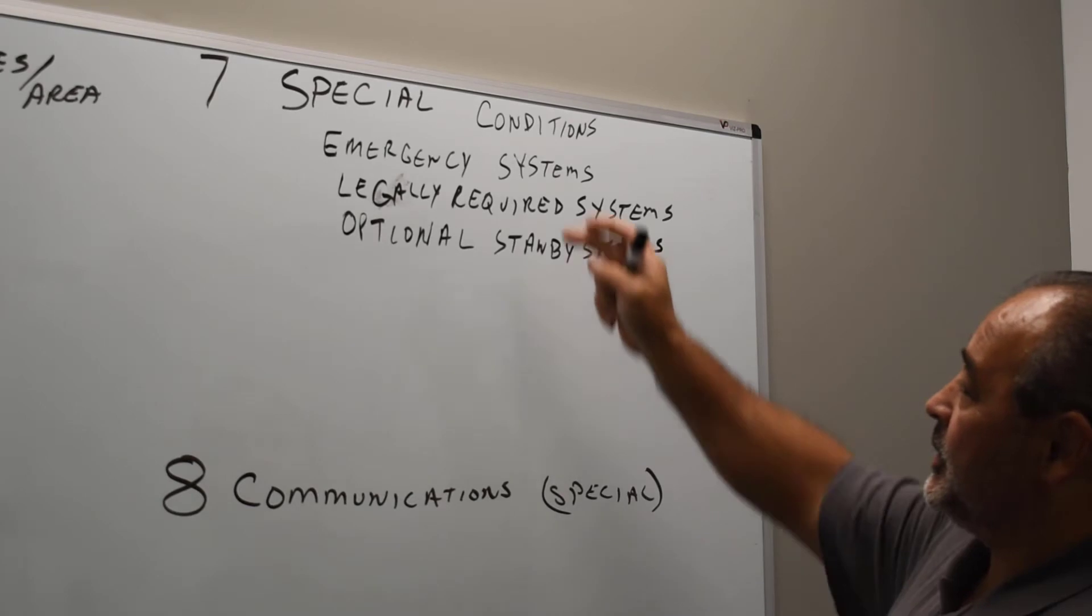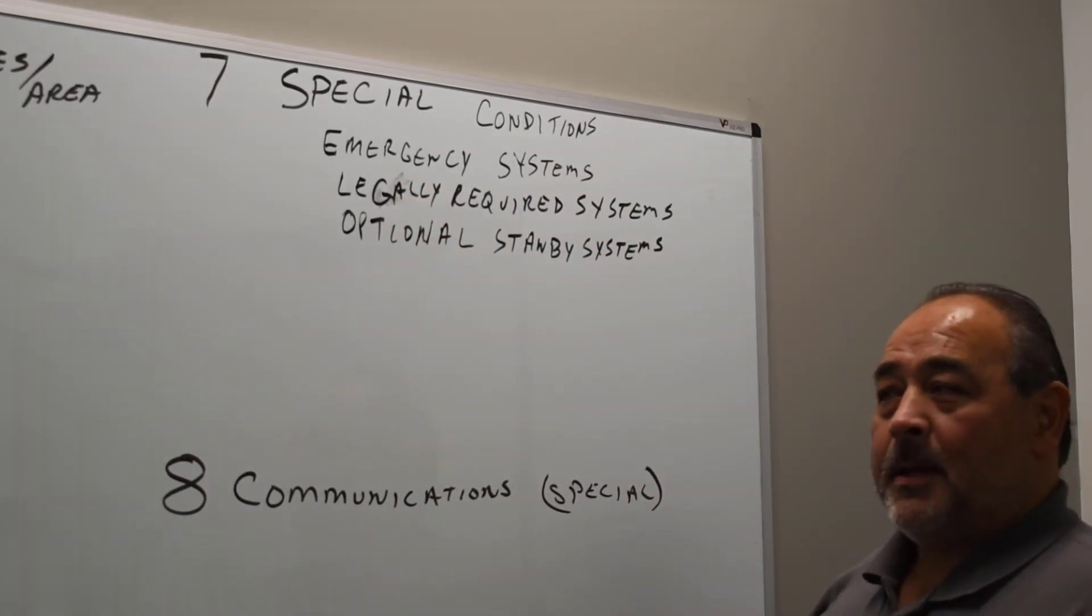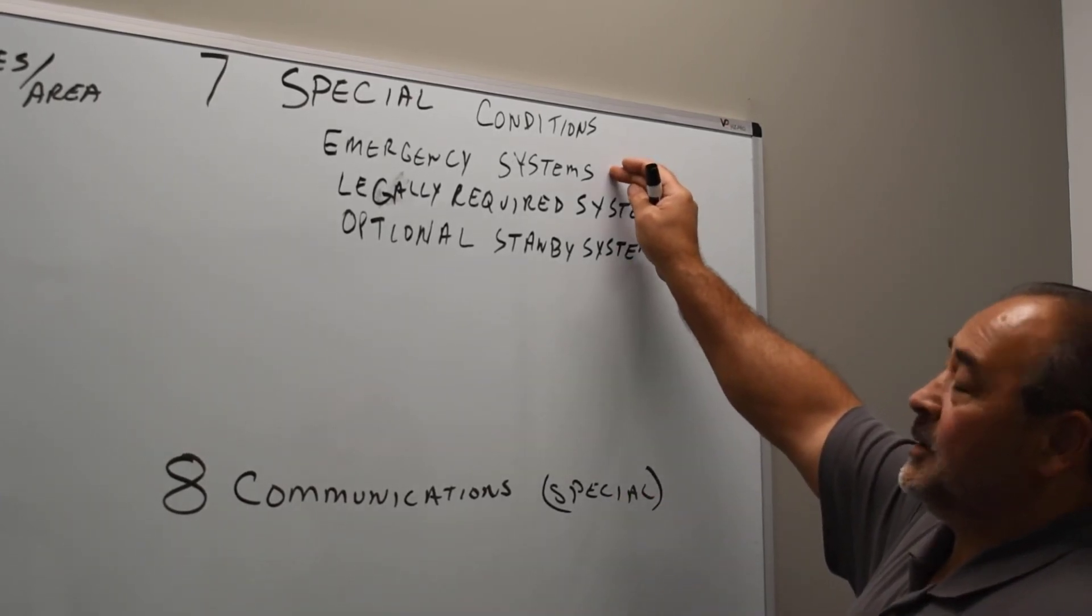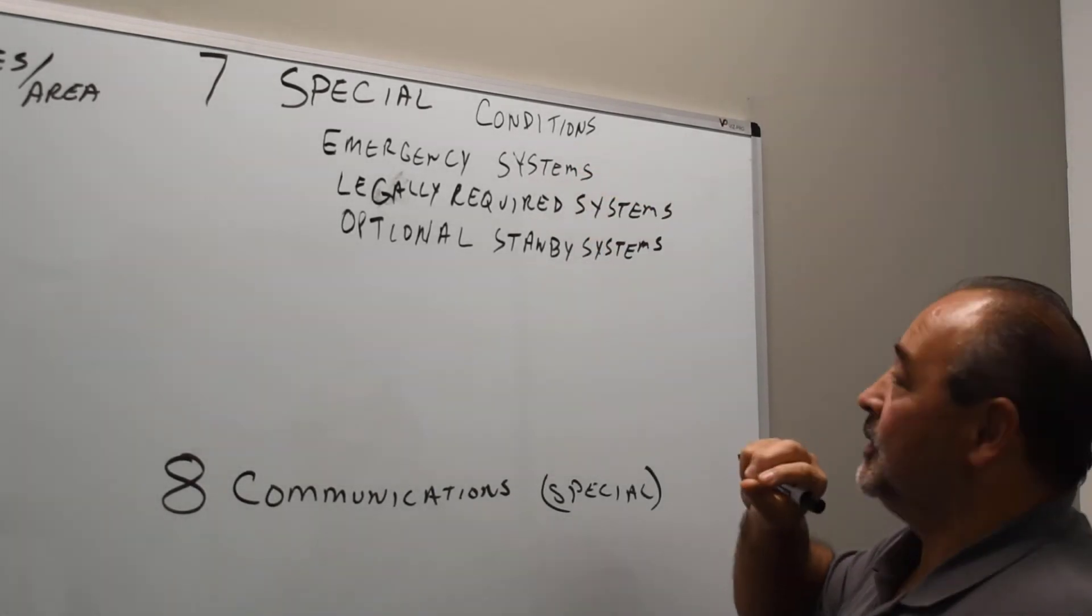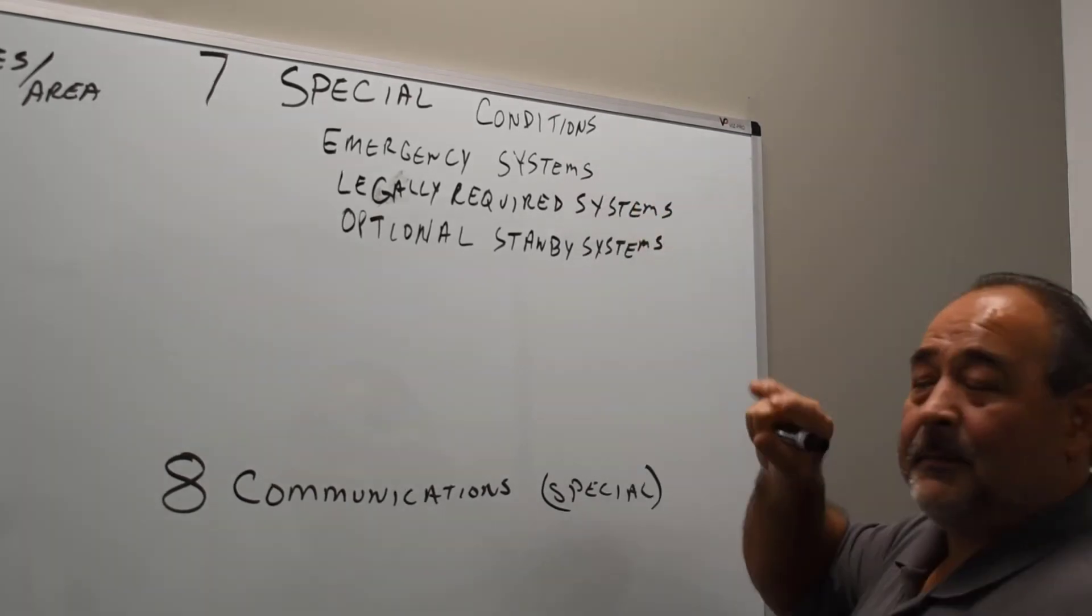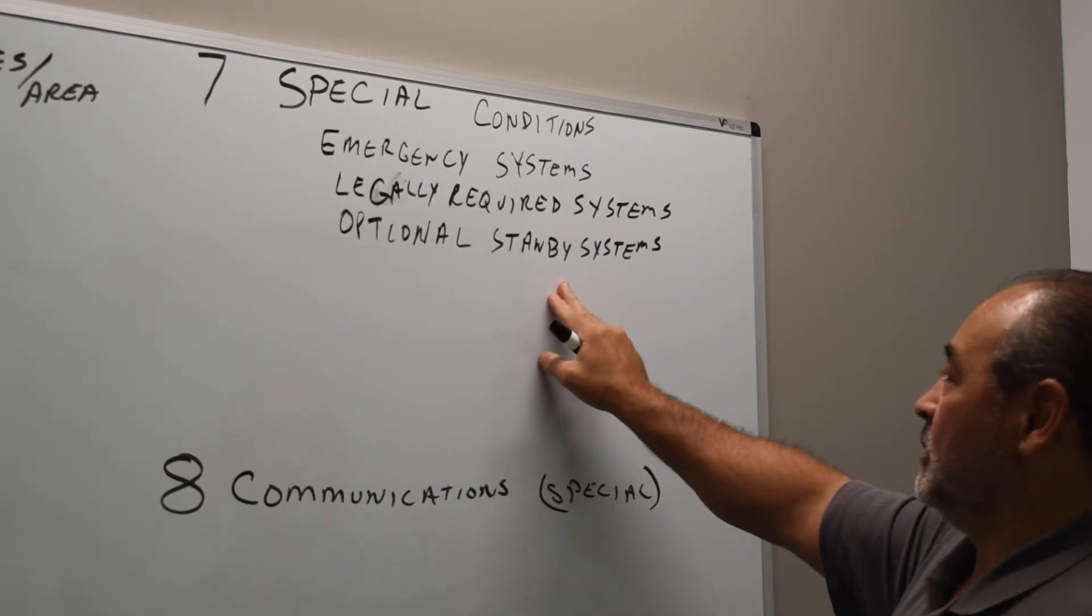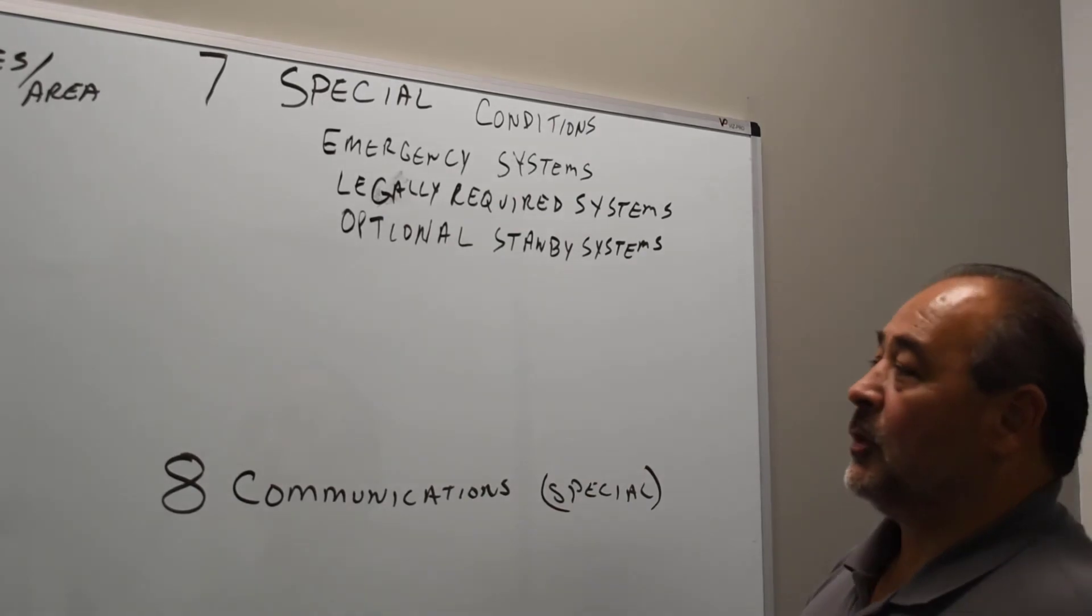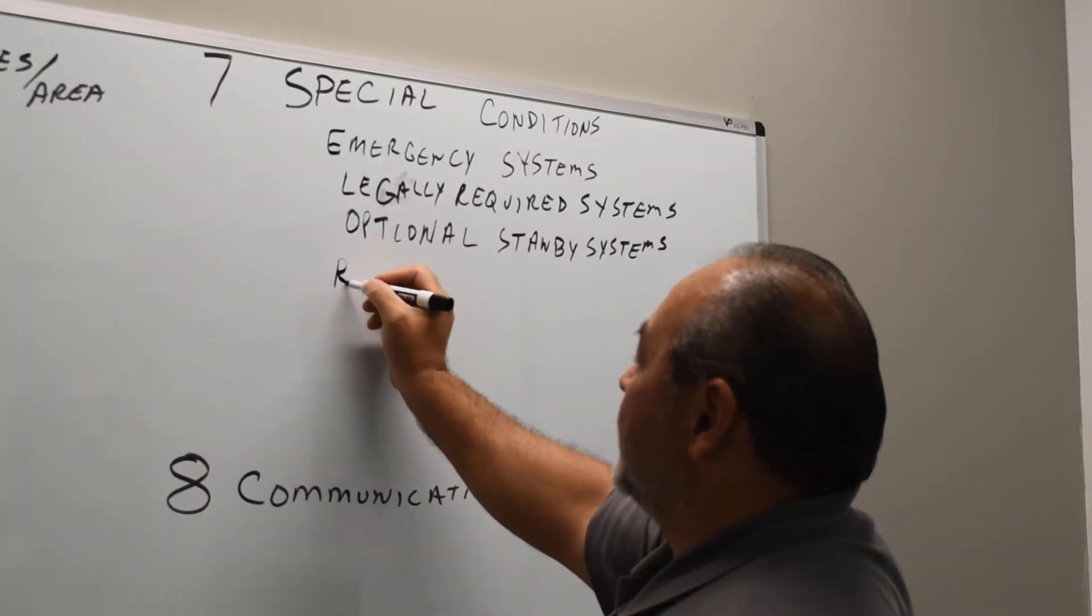Then we got optional standby systems. The reality of these three systems, emergency, legally or optional, they can all be the same products, a generator. But the way you wire things up in emergency systems is very special. It's a special condition. The way you wire things up in a legally required system is different than the emergency system, but it's a special system. The way you wire things up in an optional standby system is different than the emergency or legally required. So it's the wiring methods, the conditions required for those different things.